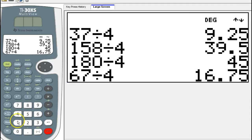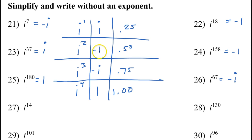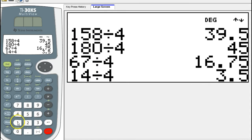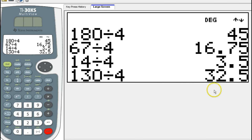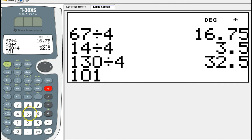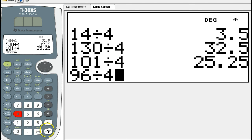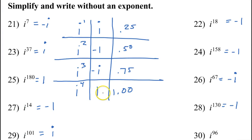i to the 14th power: 14 divided by 4 gives .5, so the answer is negative 1. i to the 130th power: dividing by 4 gives .5 again, so that also equals negative 1. i to the 101st power: 101 divided by 4 gives .25, so the answer is i. And i to the 96th power: 96 divided by 4 goes in evenly — 0 decimals — so the answer is 1. And that is how you simplify i to any power.